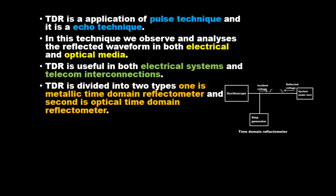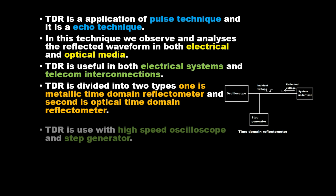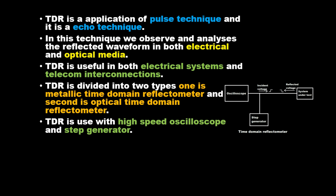TDR is divided into two types: one is metallic time domain reflectometer and second is optical time domain reflectometer. TDR is used with a high-speed oscilloscope and step generator.